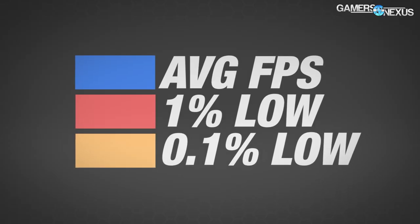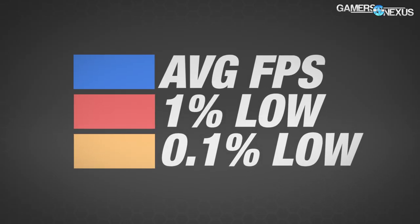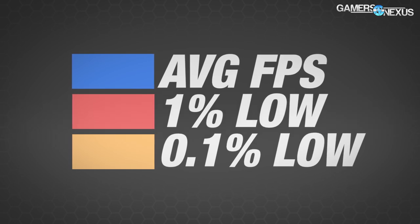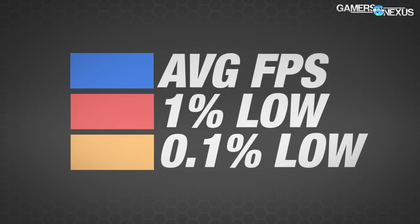As you've seen in our FPS charts for different reviews — video cards, CPUs, and so forth — we report FPS in three metrics: the average FPS, 1% lows, and 0.1% lows.